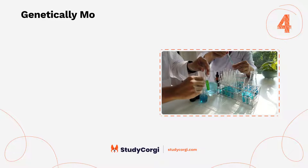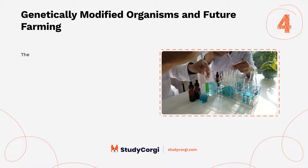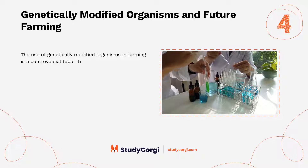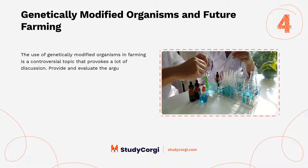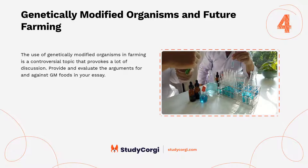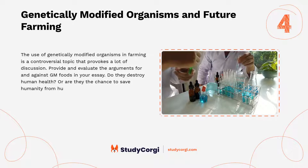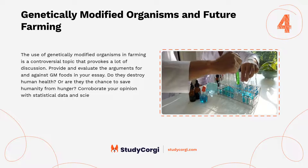Genetically modified organisms and future farming. The use of genetically modified organisms in farming is a controversial topic that provokes a lot of discussion. Provide and evaluate the arguments for and against GM foods in your essay. Do they destroy human health, or are they the chance to save humanity from hunger? Corroborate your opinion with statistical data and scientific research.